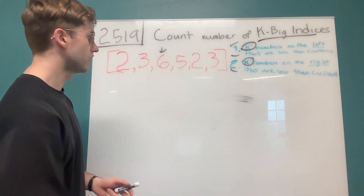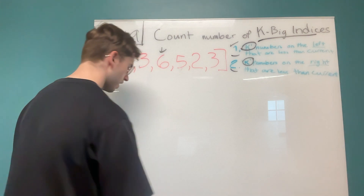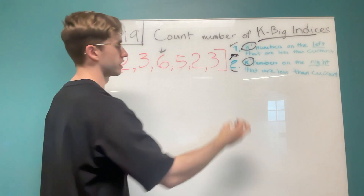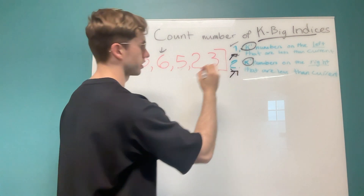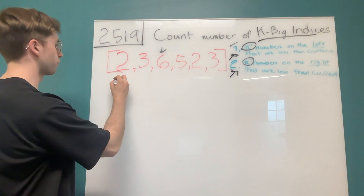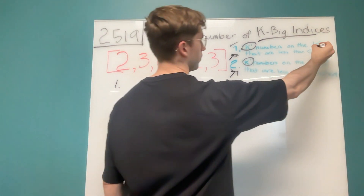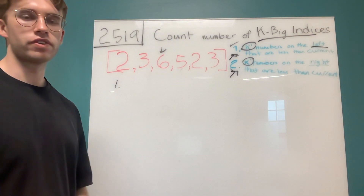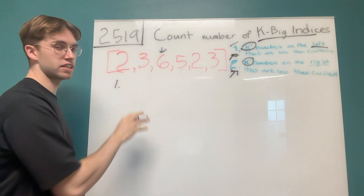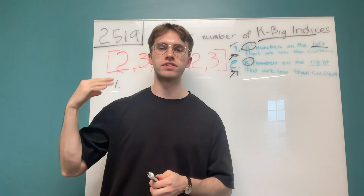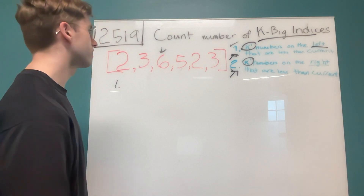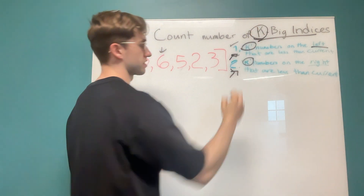What two max heaps allow us to do is first validate the left condition for each position, and then validate the right condition for each case. As we move along, we'll be adding to our max heap to maintain the highest numbers seen so far. The trick is that our max heap is only going to be size k.